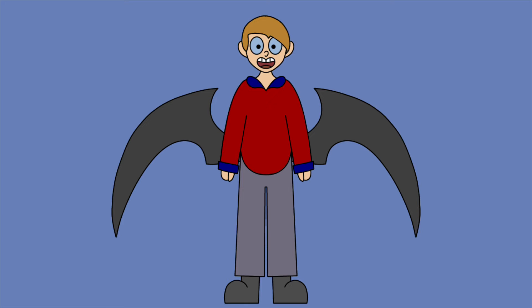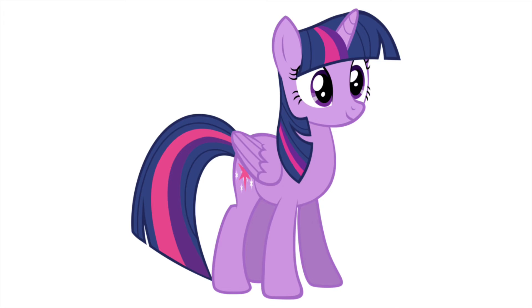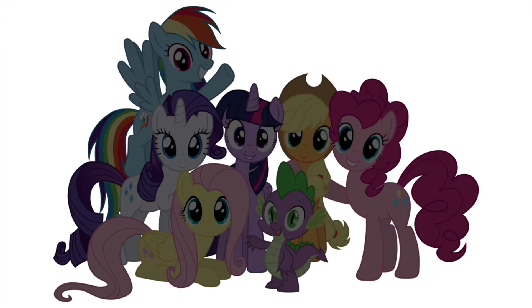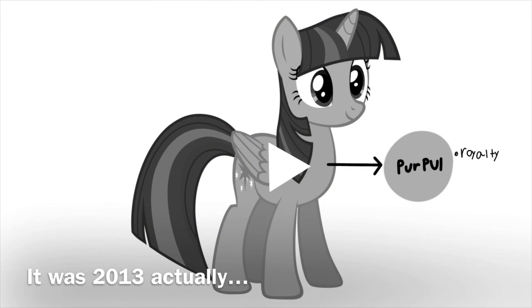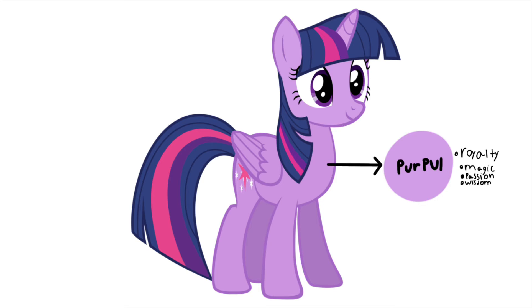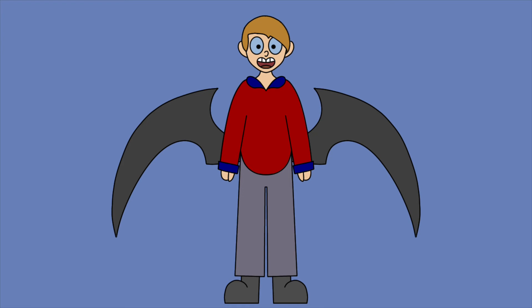And that leads us right into color palette. A character's colors need to say something about the character, but also look good together. You need to have the right amount of contrast and take things like hue and saturation into consideration. A good example of color language is Twilight Sparkle from My Little Pony. My Little Pony characters tend to have similar silhouettes, so a lot of the designs tend to rely more heavily on color language. Twilight's main color is purple, which is associated with royalty — and she does become a princess at the end of Season 3. But purple is also symbolic of magic, passion, and wisdom, which are all things that are very important to her character. She also has a bit of pink in her color palette, likely to symbolize love, femininity, and friendship.